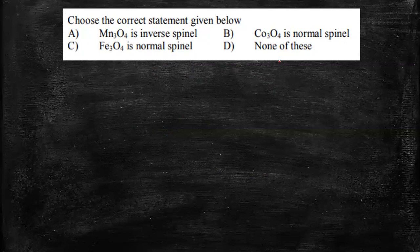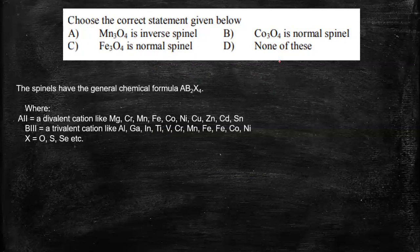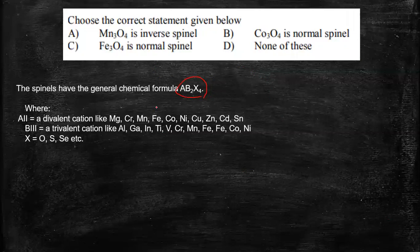Now let's see. A normal spinel has a general formula AB2X4. So what is this A? What is this B? So A would be having an oxidation state of 2 and it's a divalent cation like plus 2 cation where Mg2+, Cr2+, Mn2+, this kind of cation. And the B should be something of plus 3 type which is like Al3+, Ti3+, V3+, this kind, and X can be anything like oxygen, sulfur, etc.